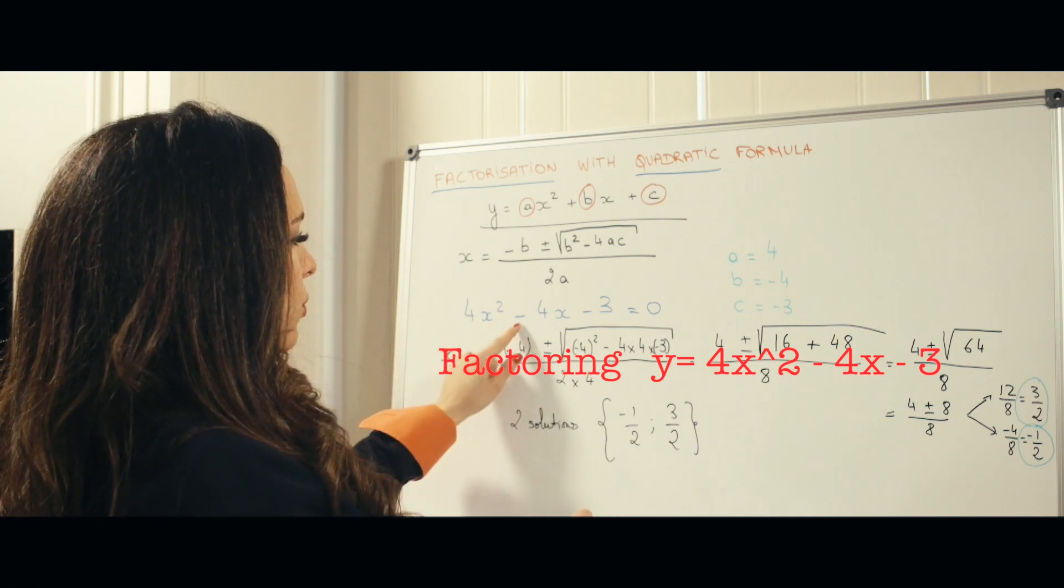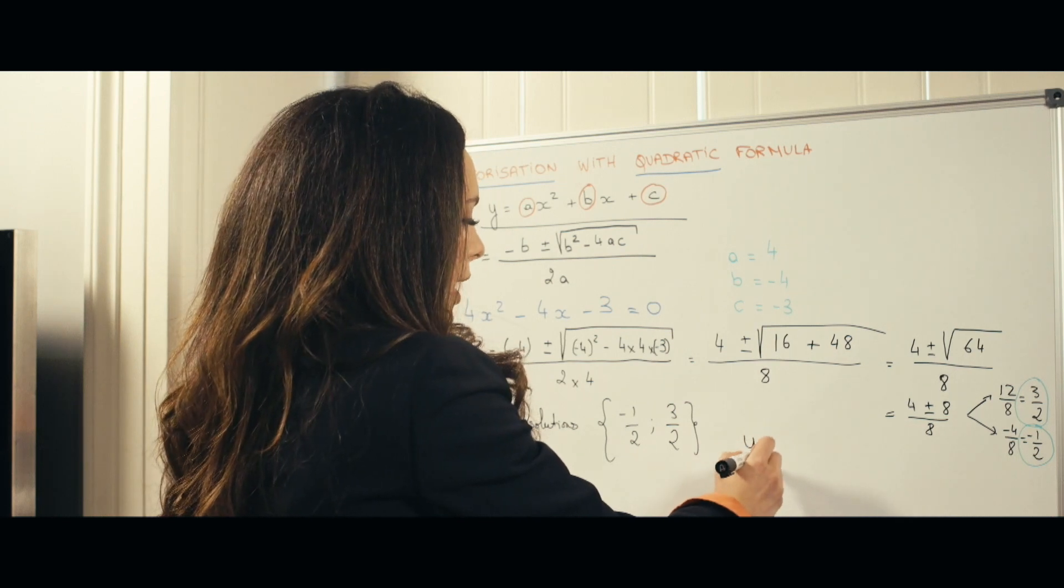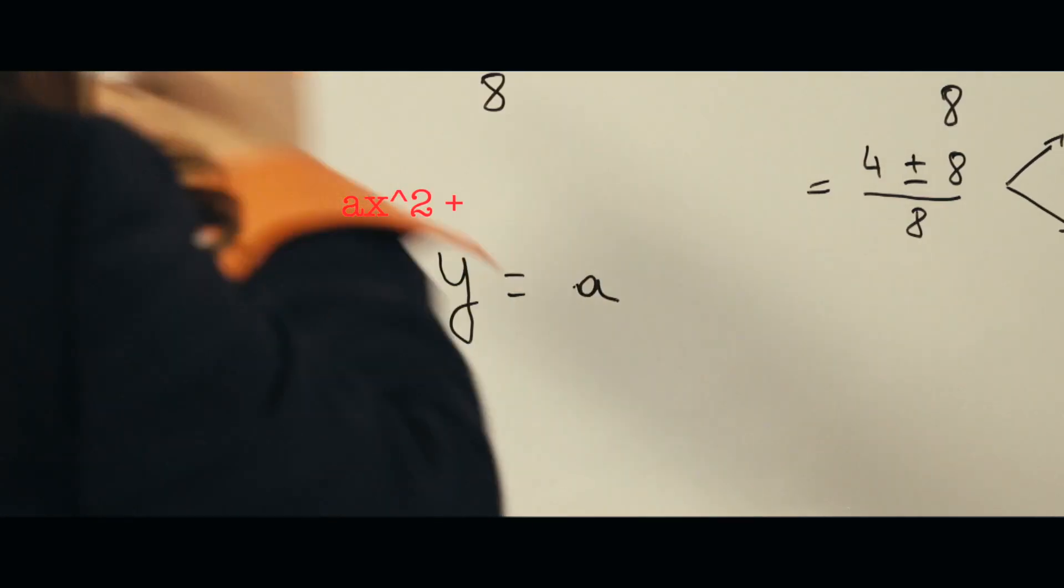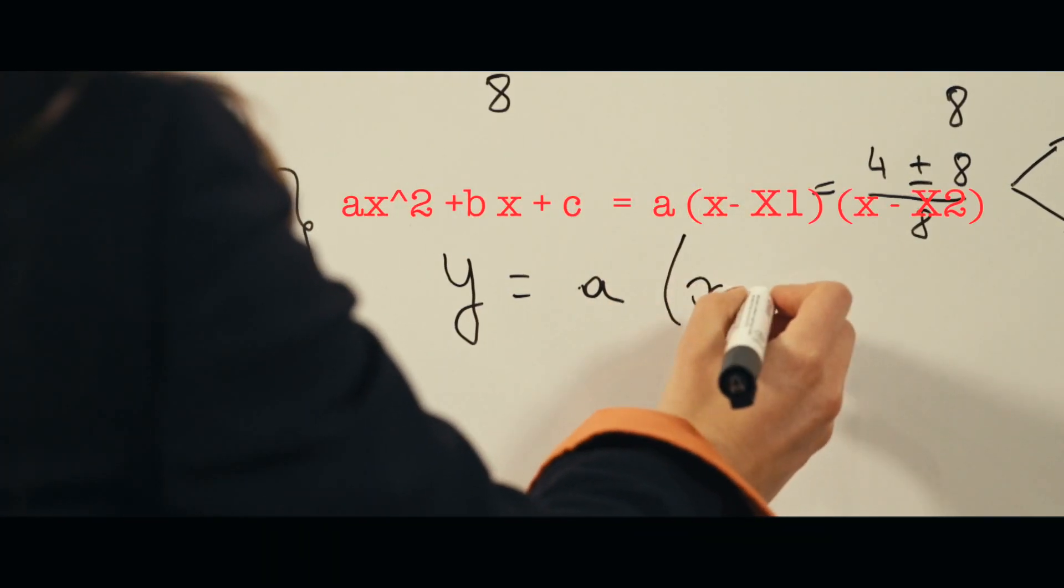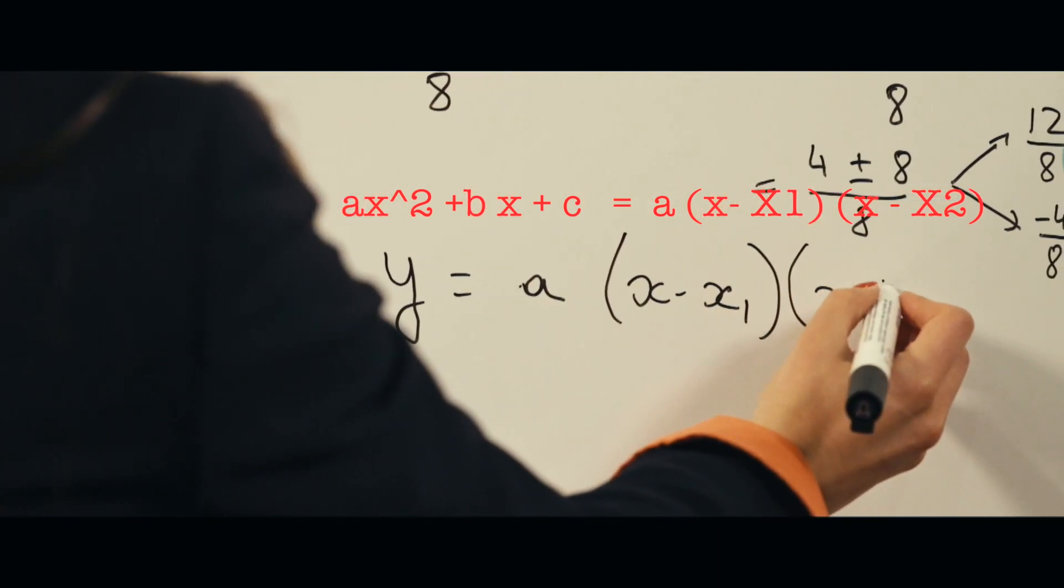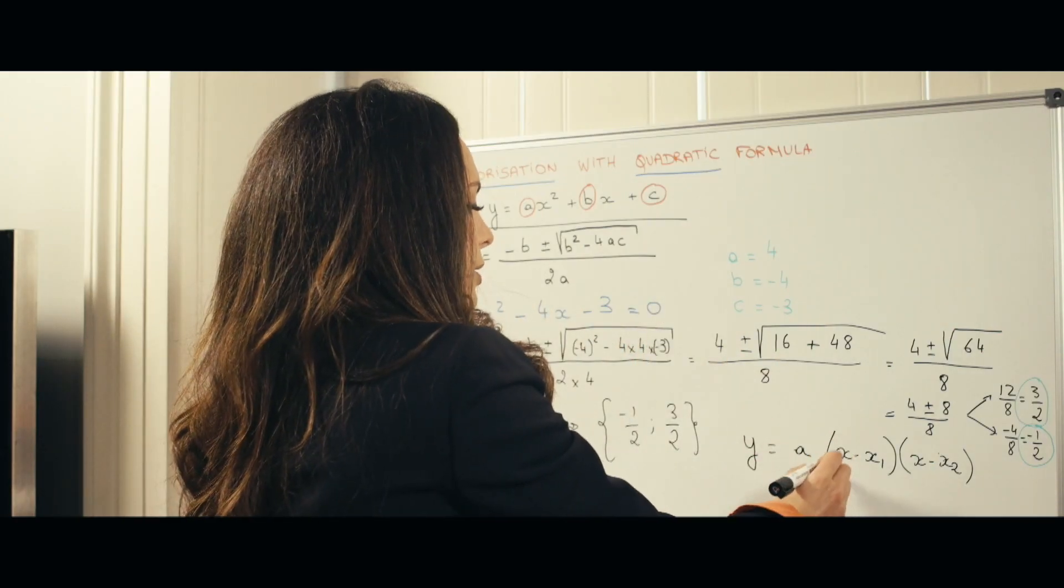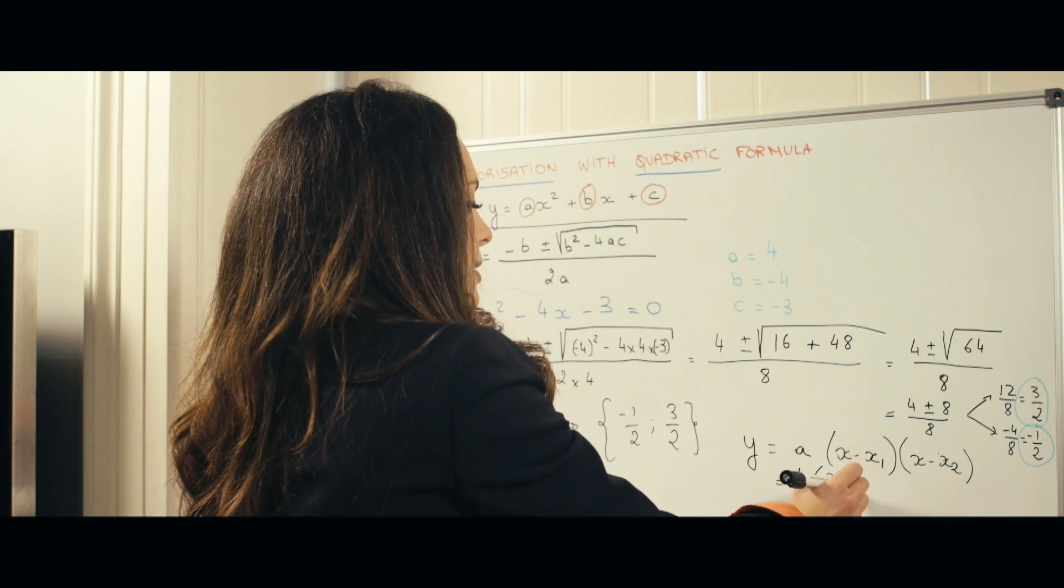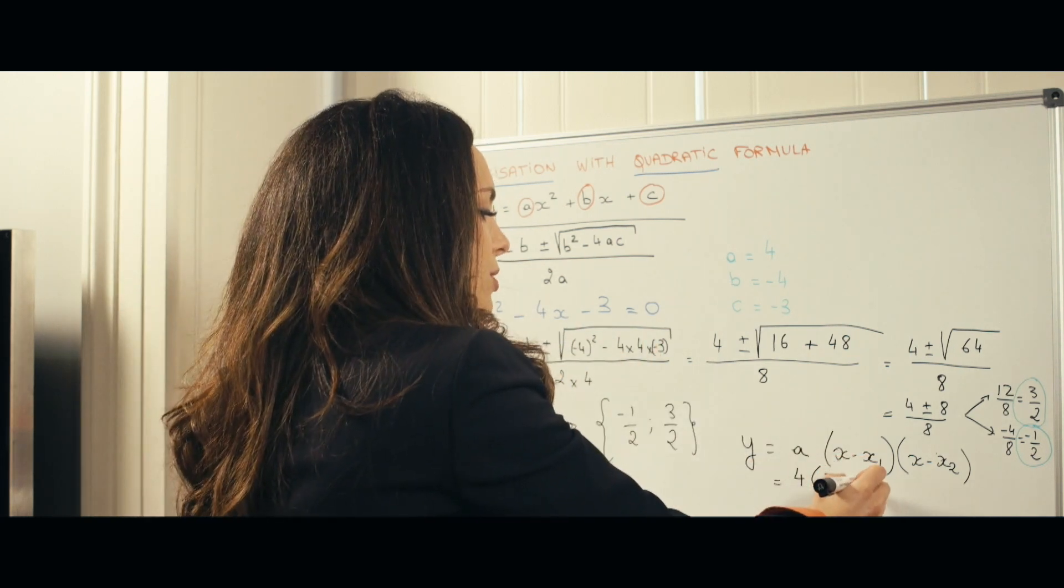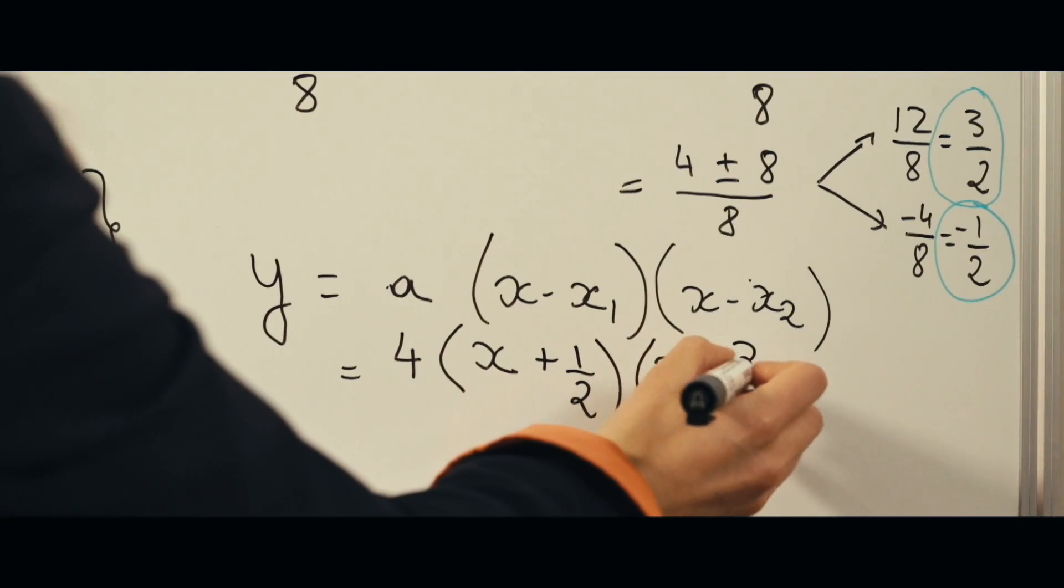If you had y equals 4x squared minus 4x minus 3, then you would have to write y equals a times x minus x1 times x minus x2, which equals 4 times x minus minus 1 half, which is plus 1 half, times x minus 3 halves.